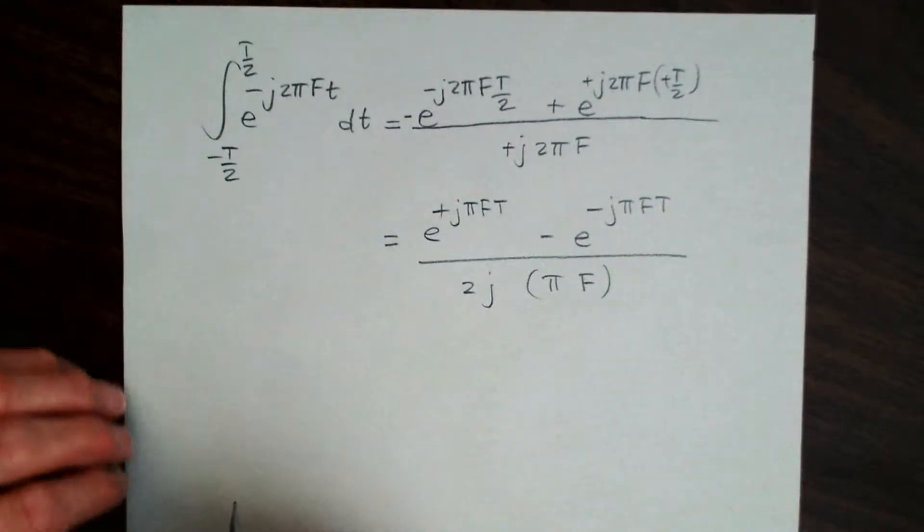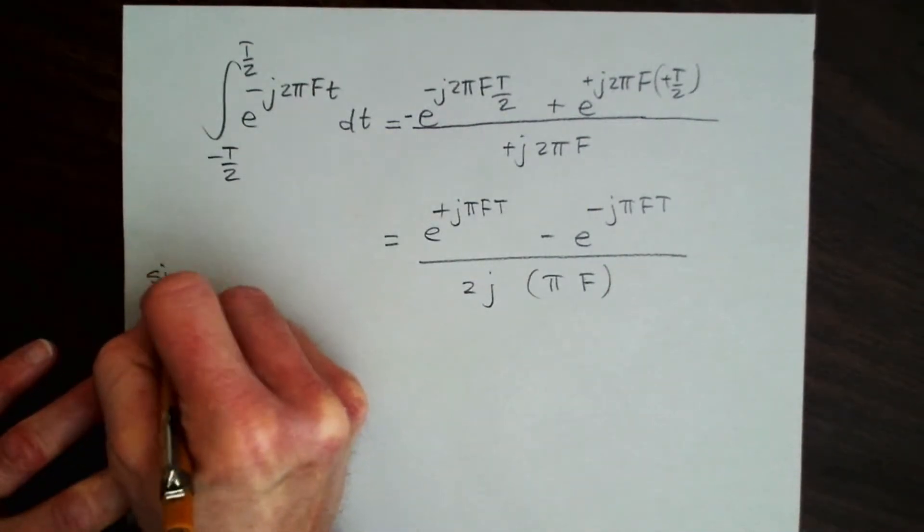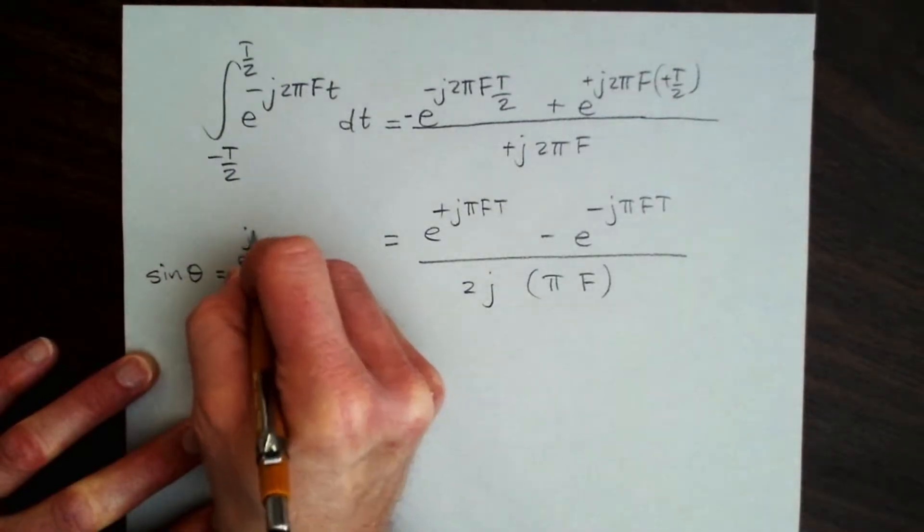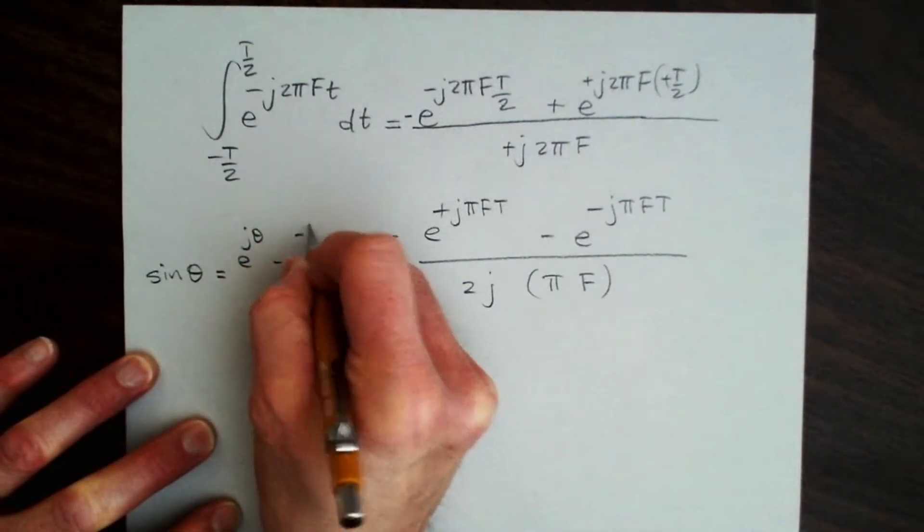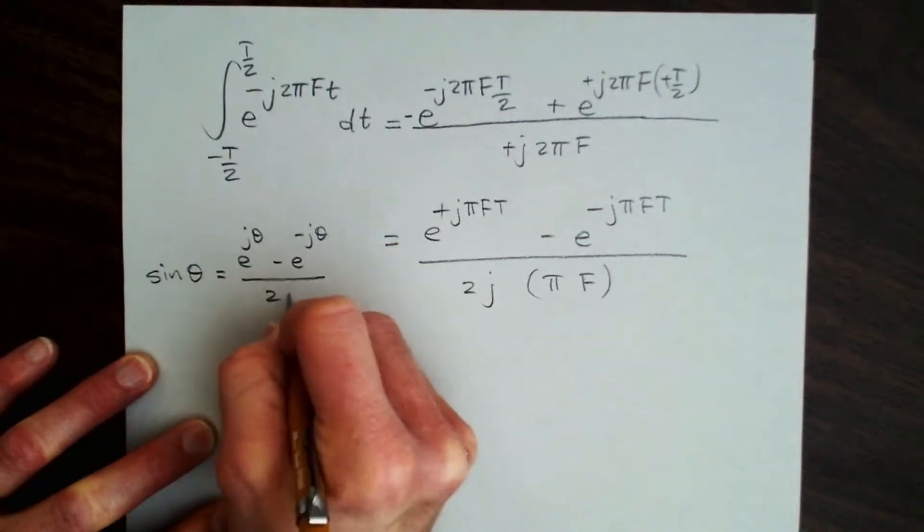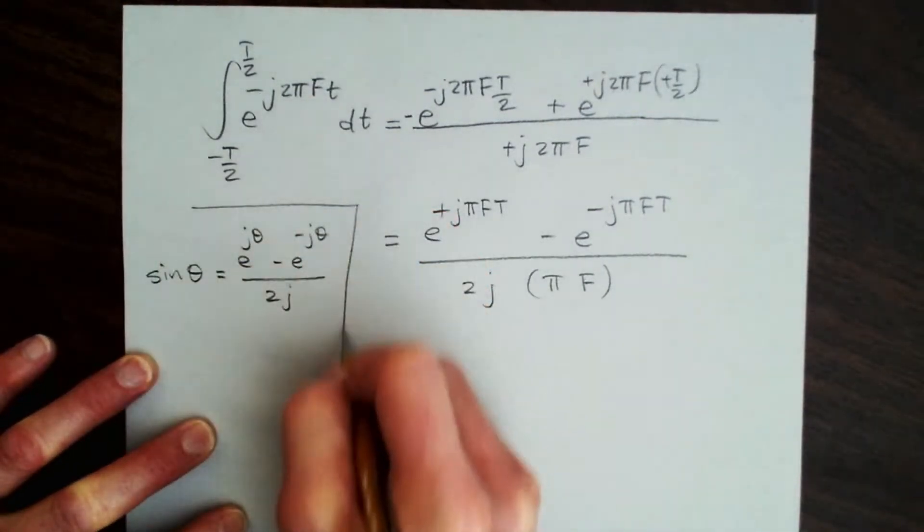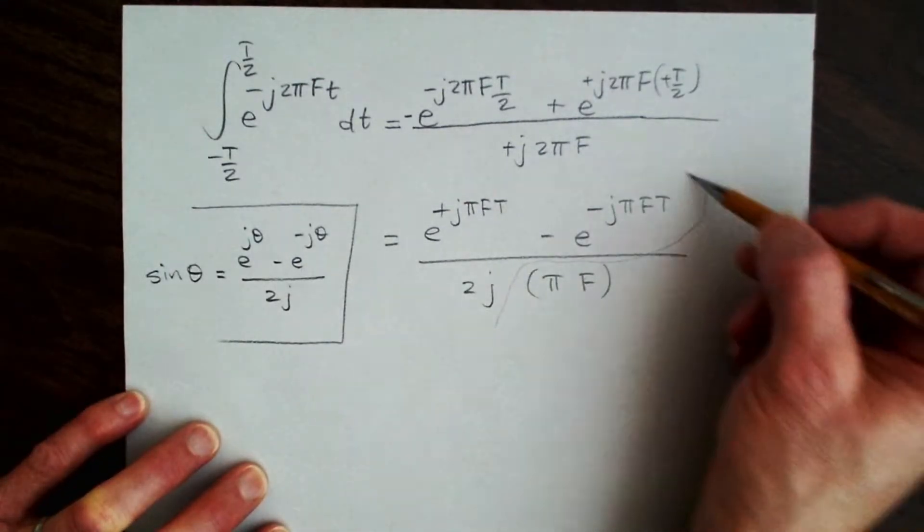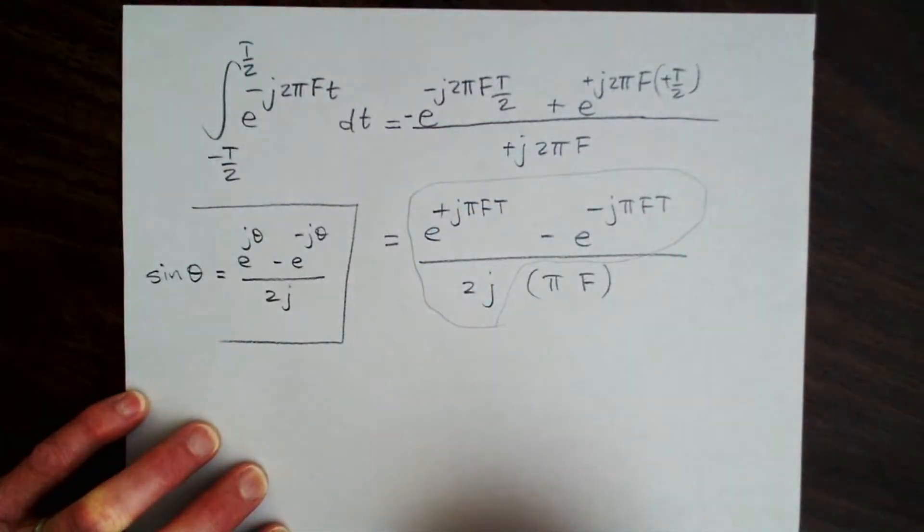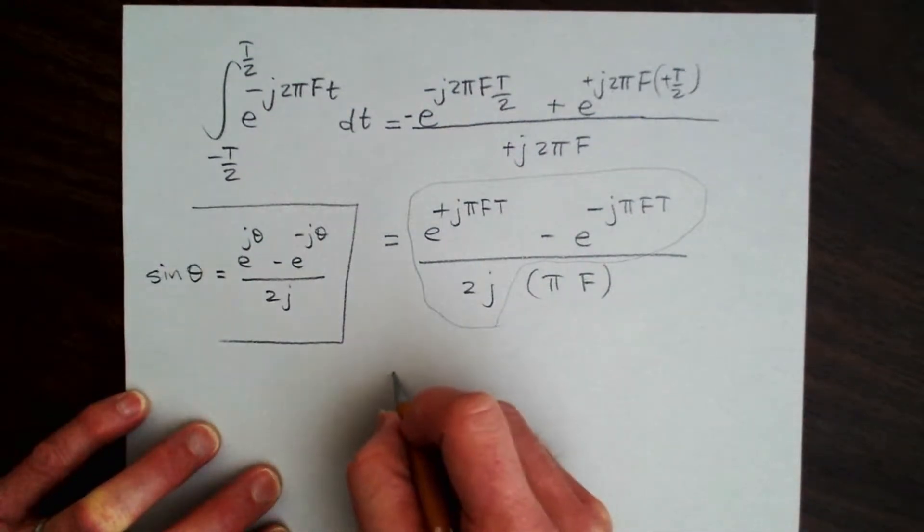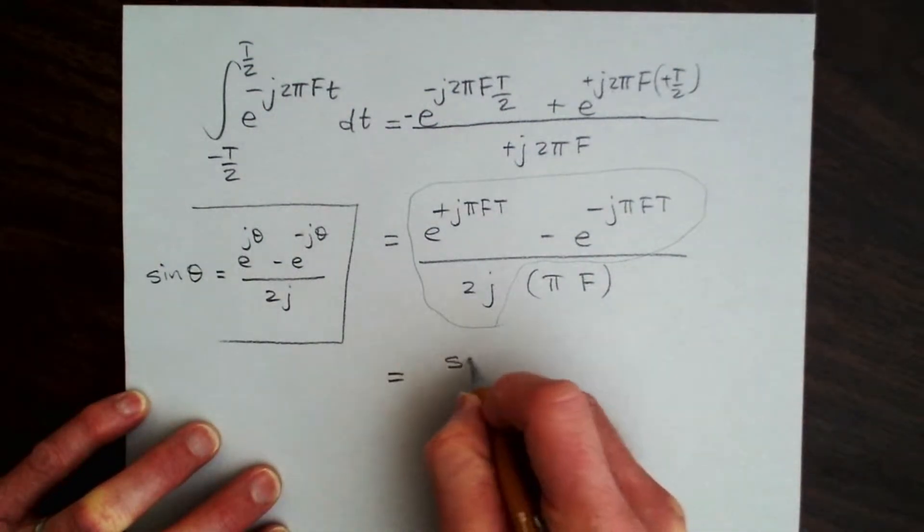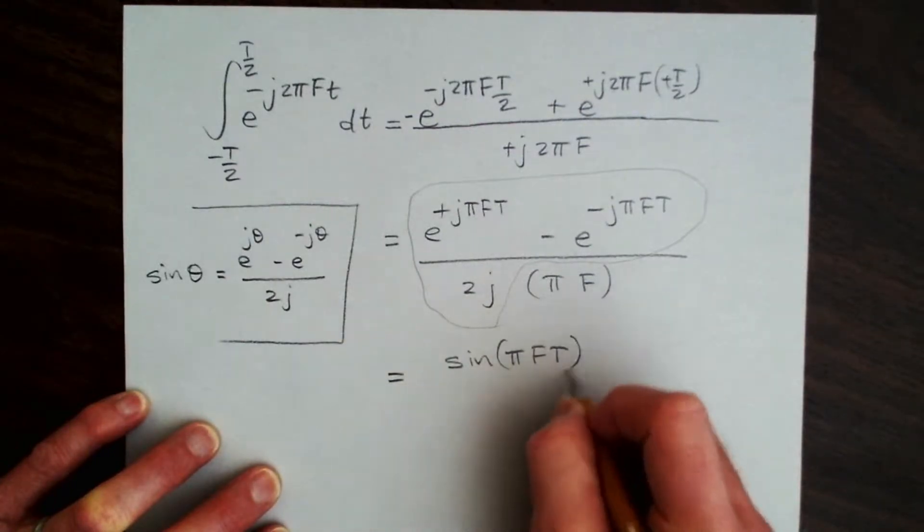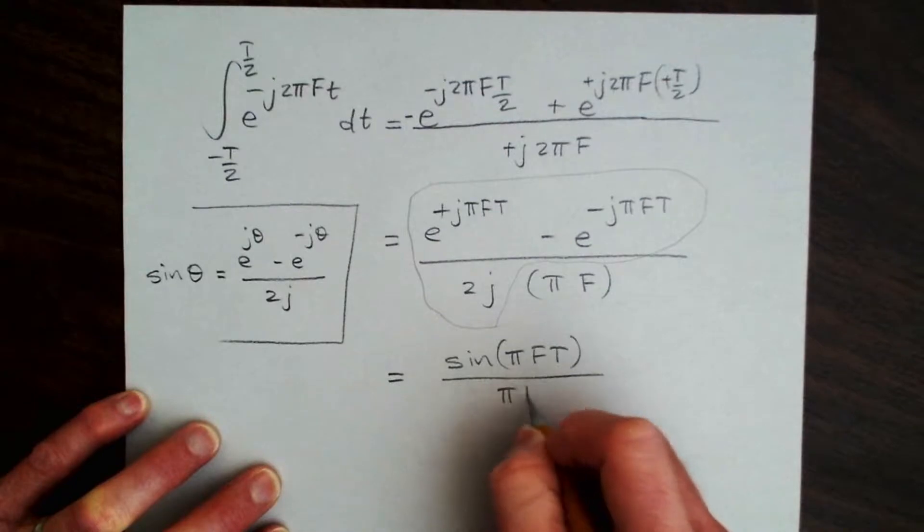And the reason that I want to do that is because we know that sine of θ is equal to e to the jθ minus e to the minus jθ, divided by 2j. And so if you can see what's happening right here, that's equal to the sine of π f T.